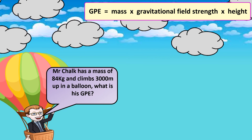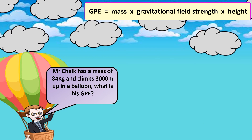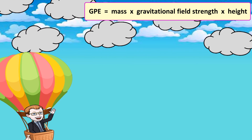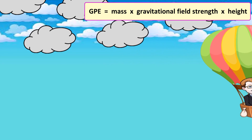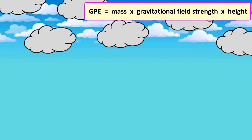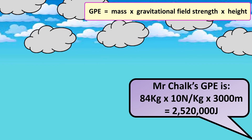And if I climb 300 meters in a balloon, what would be my GPE? That would be 84 times 10 times 300, which gives 2,520,000 joules.